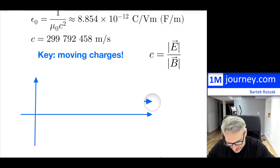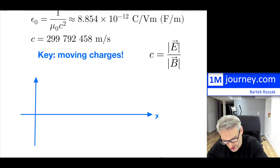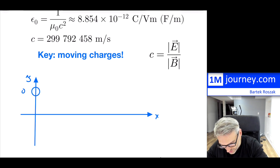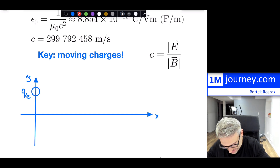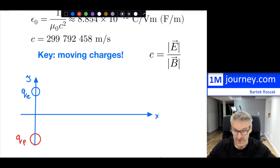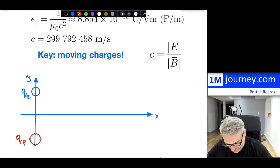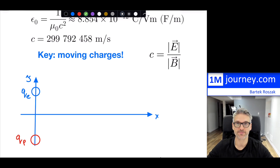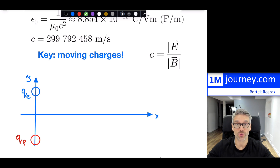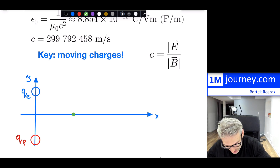Let's imagine we're plotting x and y axes. If I put a charge here — let's say an electron charge — and then put the opposite charge, a proton charge, on exactly the opposite side, these two charges in magnitude are the same. Let's see how to calculate the electric field at a point. For the moment, let's think that they're stationary. If they are stationary, we can find the electric field at any point.